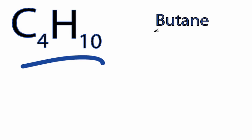This is the C4H10 Lewis structure, butane. For butane, we have a total of 26 valence electrons.